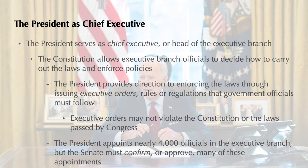The power to make executive orders, however, is limited. The president's orders may not violate the Constitution or laws passed by Congress. As chief executive, the president also has the power to appoint about 4,000 executive branch officials. As a check on that power, Congress, specifically the Senate, must confirm or approve many top appointments.